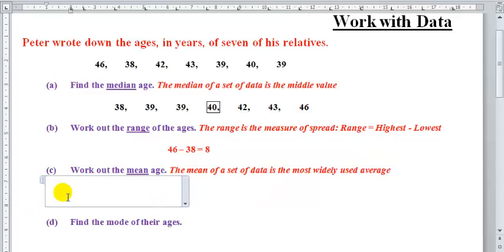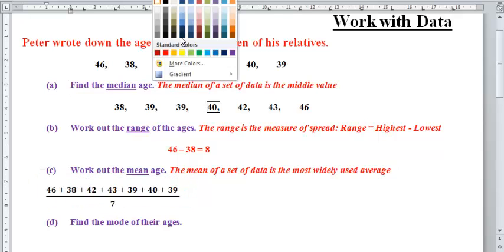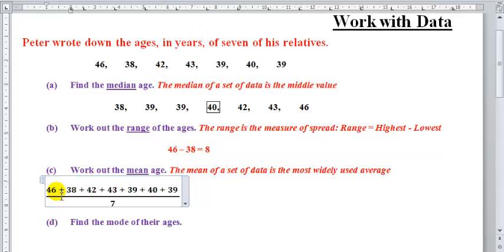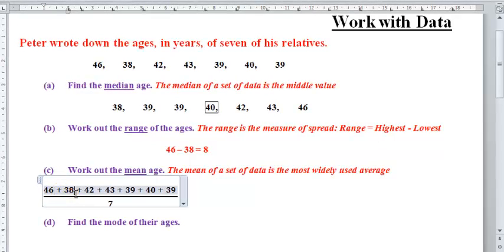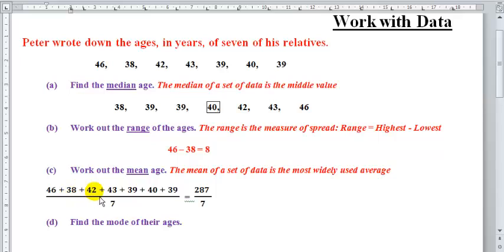So all we just need to do right there is find the average. So to find this average, we say we add up all of the data: 46 plus 38 plus 42 plus 43 plus 39 plus 40 plus 39. And what will that give us? When we add up all of this data, we arrive at 287 divided by 7, which equals 41.